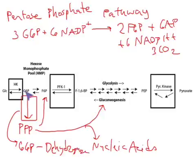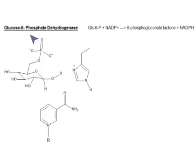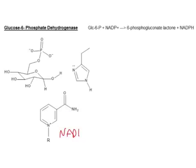G6P dehydrogenase is going to remove a hydrogen from G6P, and that's going to make one of our NADPHs. The flux control step for entering the pentose phosphate pathway is through glucose 6-phosphate dehydrogenase, where we take a G6P and react it with an NADP to make 6-phosphogluconate lactone and NADPH. NADP looks just like regular NAD, except the nucleotides on it have a phosphate.